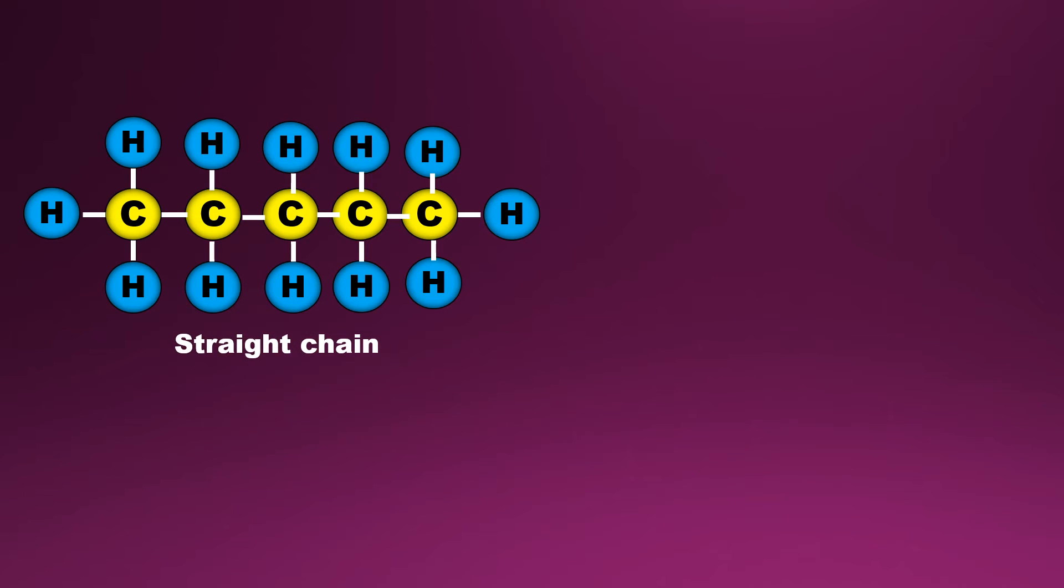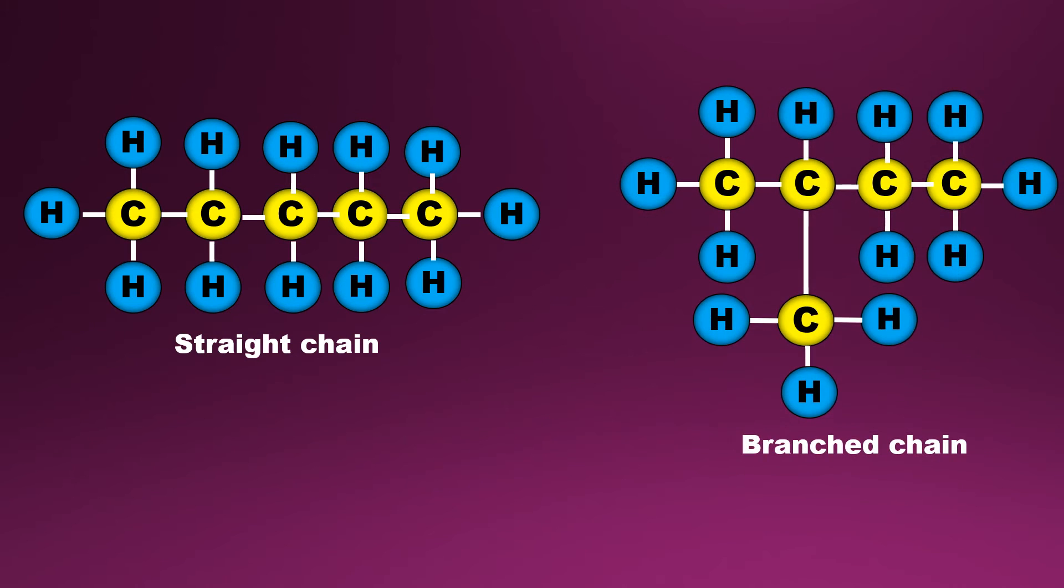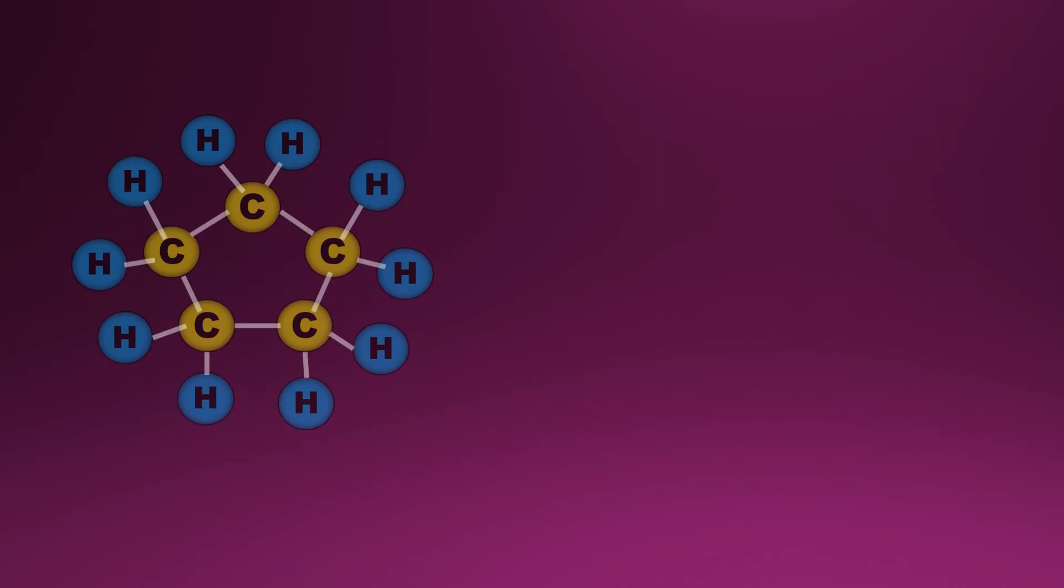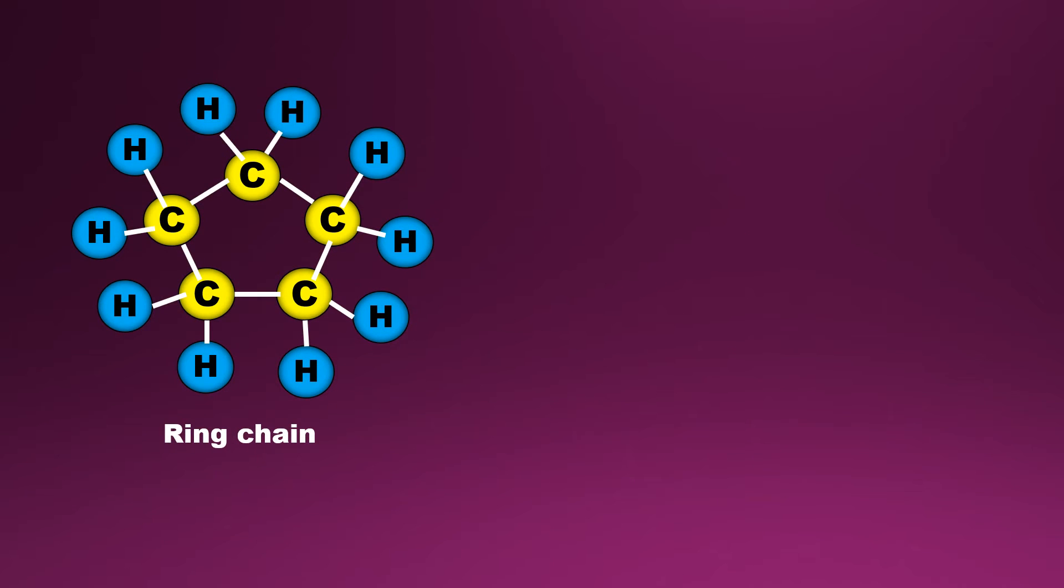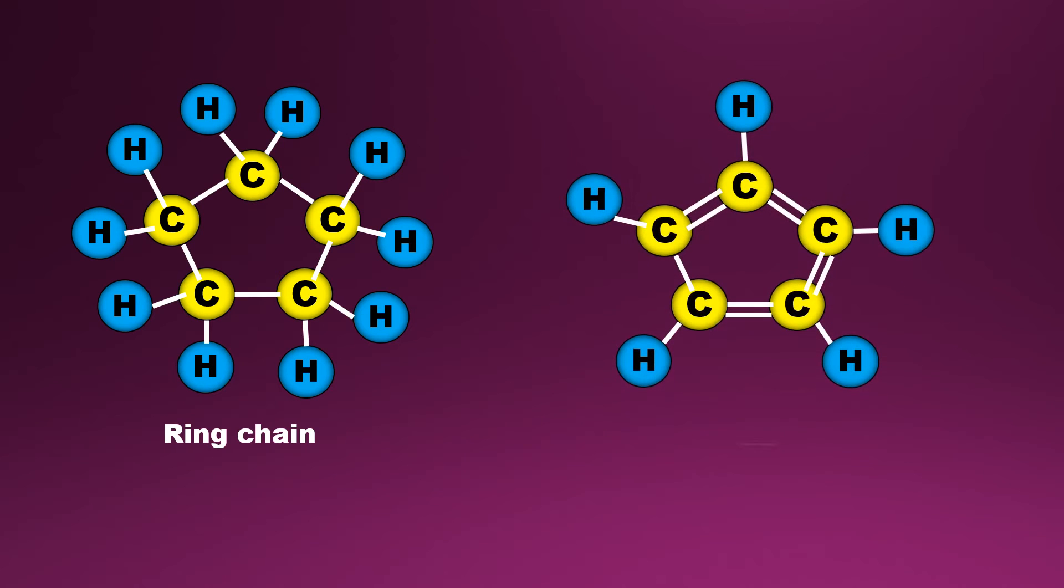The bonding between carbon and hydrogen atom forms a chain which may be straight chain, branched chain, ring chain, or double bond ring chain. Here you can see carbon should complete the four bonds to have the complete chain.